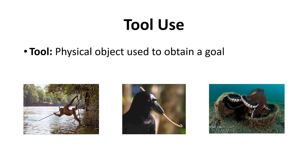Our first step is to define what we mean by tools — a tool is a physical object used to obtain a goal, usually obtaining food. For some iconic cases of tool use, we have lots of examples with different primates, such as fishing termites out of termite mounds using blades of grass and sticks. We'll also talk a lot about New Caledonian crows and their ability to use and make tools, specifically hooks.